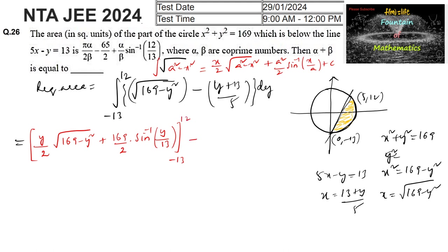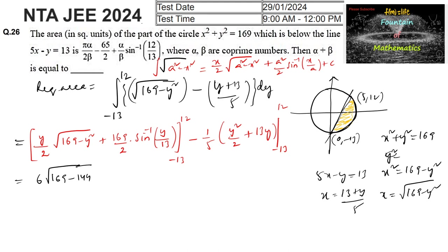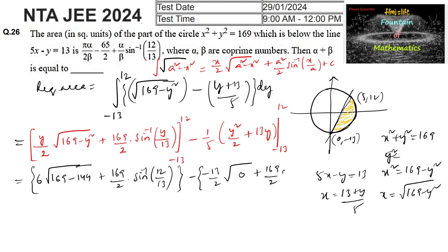Minus (1/5) times [y²/2 + 13y], evaluated over limits -13 to 12. Substituting the upper limit y = 12: (12/2)√(169 - 144) + (169/2) sin⁻¹(12/13) = 6·5 + (169/2) sin⁻¹(12/13) = 30 + (169/2) sin⁻¹(12/13). Substituting the lower limit y = -13: (-13/2)·√(169 - 169) + (169/2) sin⁻¹(-1) = 0 + (169/2)·(-π/2).